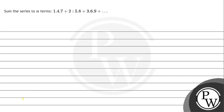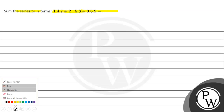Hello, let's read the question. The question says: sum the series to n terms — 1·4·7 + 2·5·8 + 3·6·9 + ... and so on.